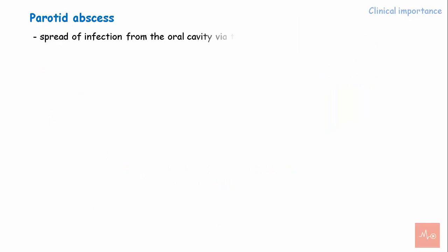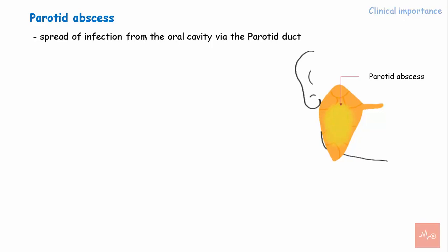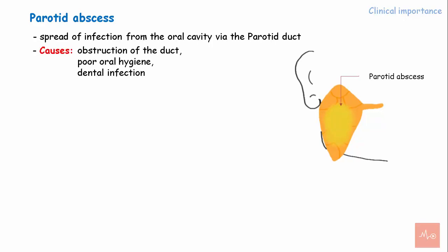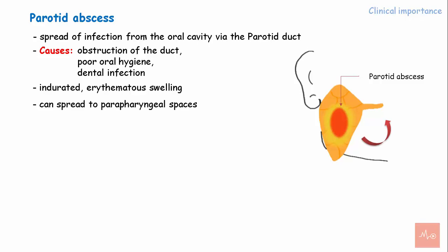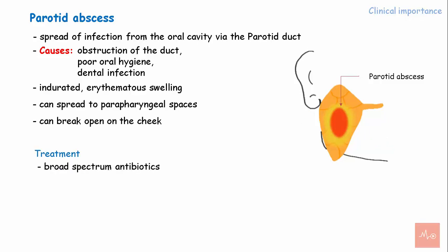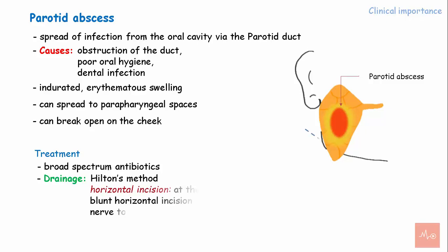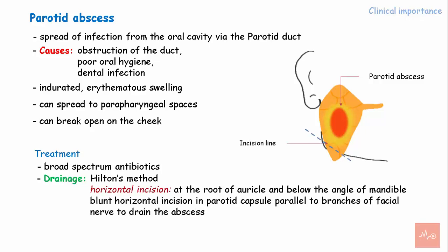Parotid abscess occurs due to spread of infection to the gland from the oral cavity via the parotid duct. Causes include obstruction of the duct, poor oral hygiene, and dental infections. Clinically, it appears as an indurated erythematous swelling. The abscess can spread to the parapharyngeal spaces or break open onto the cheek. Treatment involves administration of broad-spectrum antibiotics. Drainage may be required in acute conditions using Hilton's method, which involves a horizontal incision at the root of the auricle and below the angle of the mandible to expose the fascia, followed by a blunt horizontal incision in the parotid capsule parallel to the branches of the facial nerve to drain the abscess.